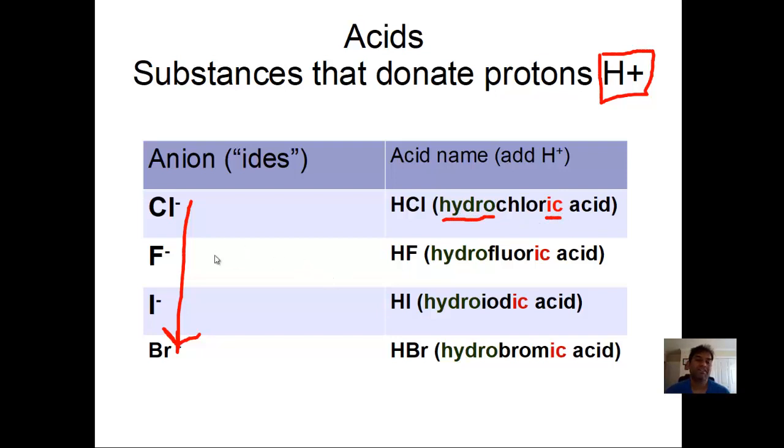Similarly for the other halogens: HF, when this takes the proton H+, becomes hydrofluoric acid. I- is hydroiodic acid. HBr, the other halogen, is hydrobromic acid. So we see -ic as the ending, and then hydro- prefix when we're dealing with the halogens.